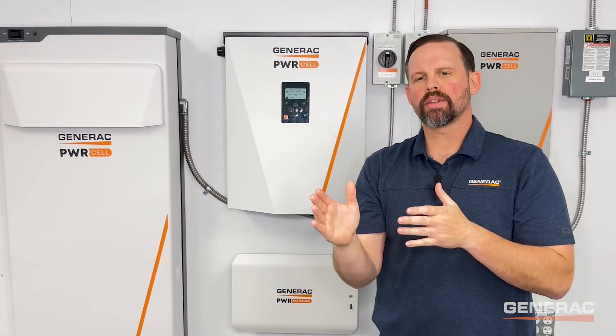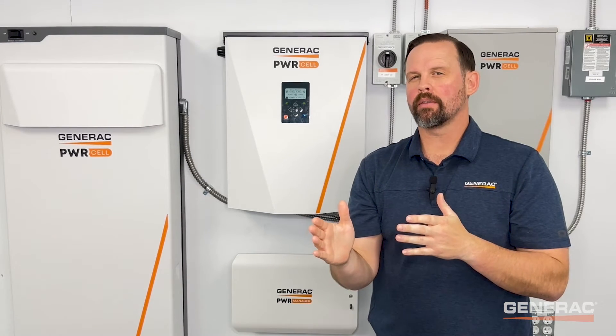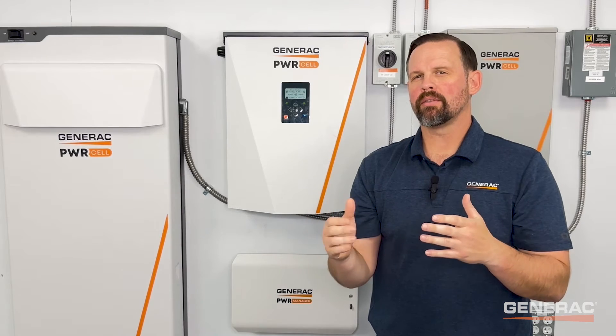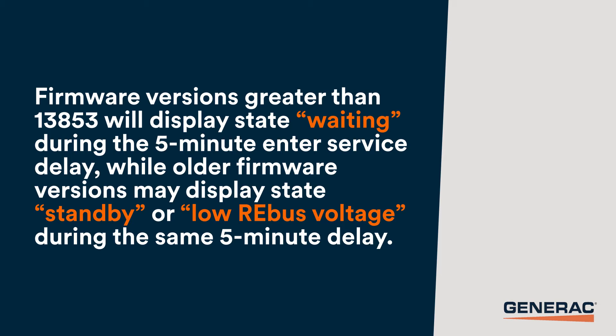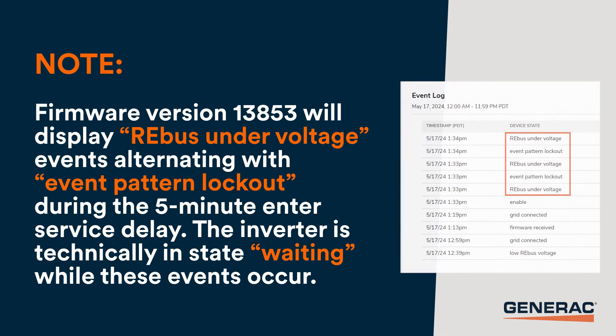New inverter firmware will enforce the enter service delay of 5 minutes upon commissioning the inverter for the first time and any time the inverter loses its grid connection thereafter. Firmware versions greater than 13.8.5.3 will display state waiting during the 5-minute enter service delay, while older firmware versions may display state standby or low rebus voltage during the same 5-minute delay. Firmware version 13.8.5.3 will display rebus under voltage events alternating with event pattern lockout during the 5-minute enter service delay. The inverter is technically in a waiting state while these events occur.